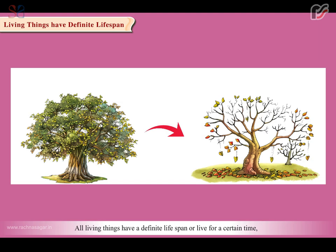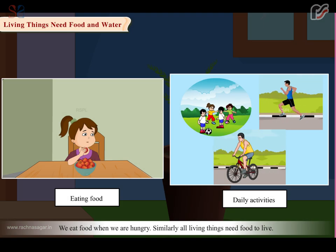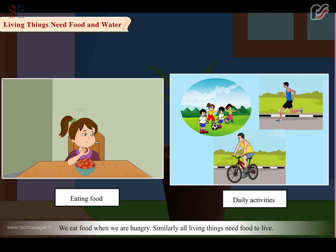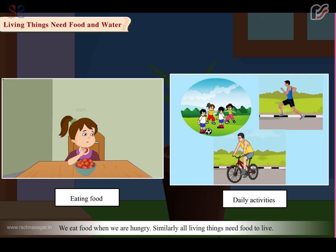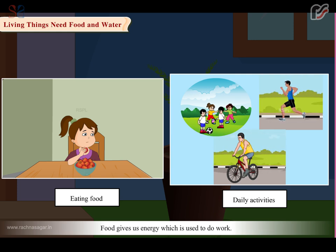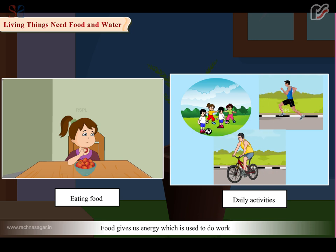All living things have a definite life span and live for a certain time. After that, they start to become weak and eventually die. We eat food when we are hungry. Similarly, all living things need food to live. Food gives us energy which is used to do work.